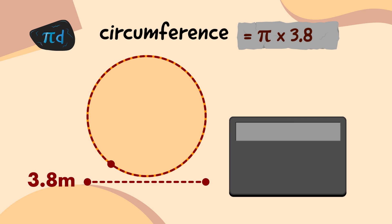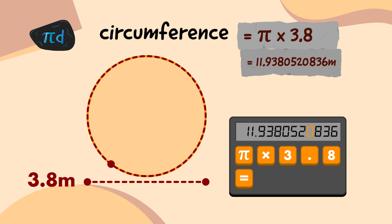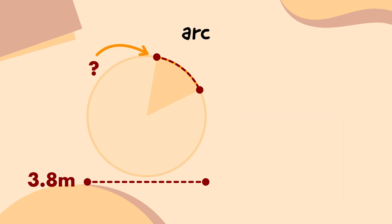On my calculator, I'll press the pi button, press the multiply button, type 3.8, and press the equals button, which tells me that the circumference of the emblem is 11.9380520836 metres. Now I know the circumference, I can work out the arc length.